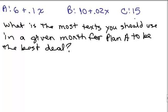Here are our cost models for Plan A, B, and C per month based on X texts. So here's a question. What's the most texts you should use in a given month for Plan A to be the best deal? We know that for a smaller number of texts, we want that amount to be less than what you would pay for B. So the question is 6 plus 0.1x, we want that to be a better deal, so we want it to cost less money than we would pay on this other plan.